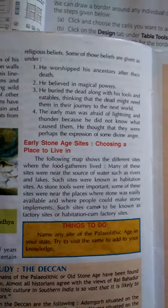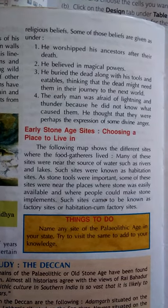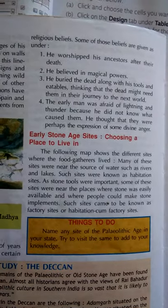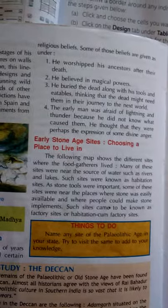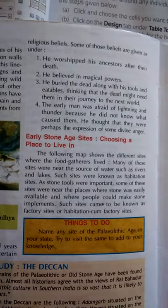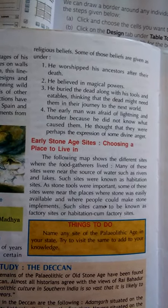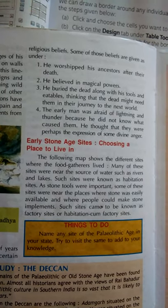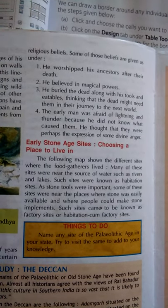The next heading is Early Stone Age Sites — choosing a place to live. There is a map showing different sites where people gathered to live. The importance of these sites was that they were places where stone was easily available, and where people could make stone implements.